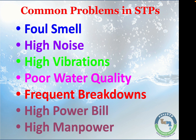What are the common problems that come up in STPs? The number one problem is foul smell. Number two is high noise levels, followed by high vibrations. If those seem manageable, then the water quality is poor — customers complain of yellowish water, insects, or stinking flush water. And even with a professional O&M contractor, there are frequent breakdowns — pump failures, equipment failures. In addition, electricity bills are high, and manpower cost is high and continuously rising.